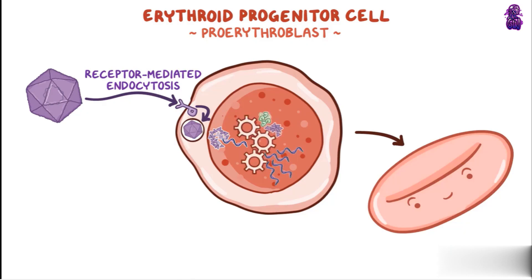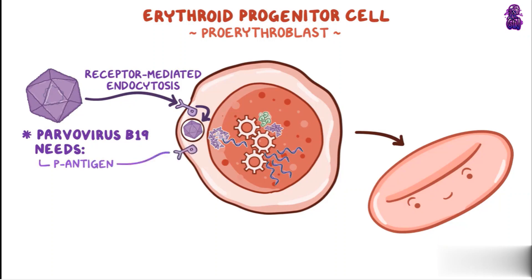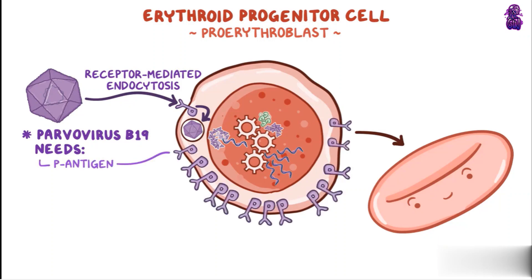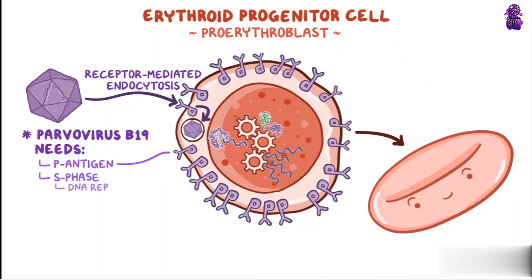Why not simply replicate in cells of the respiratory system? It turns out that Parvovirus B19 needs two things. It prefers to bind to a specific receptor, the P antigen, which is found in large numbers on proerythroblast cell membranes. And it needs cells that pass through the S phase of the cell cycle, which is the phase where cell DNA is replicated.